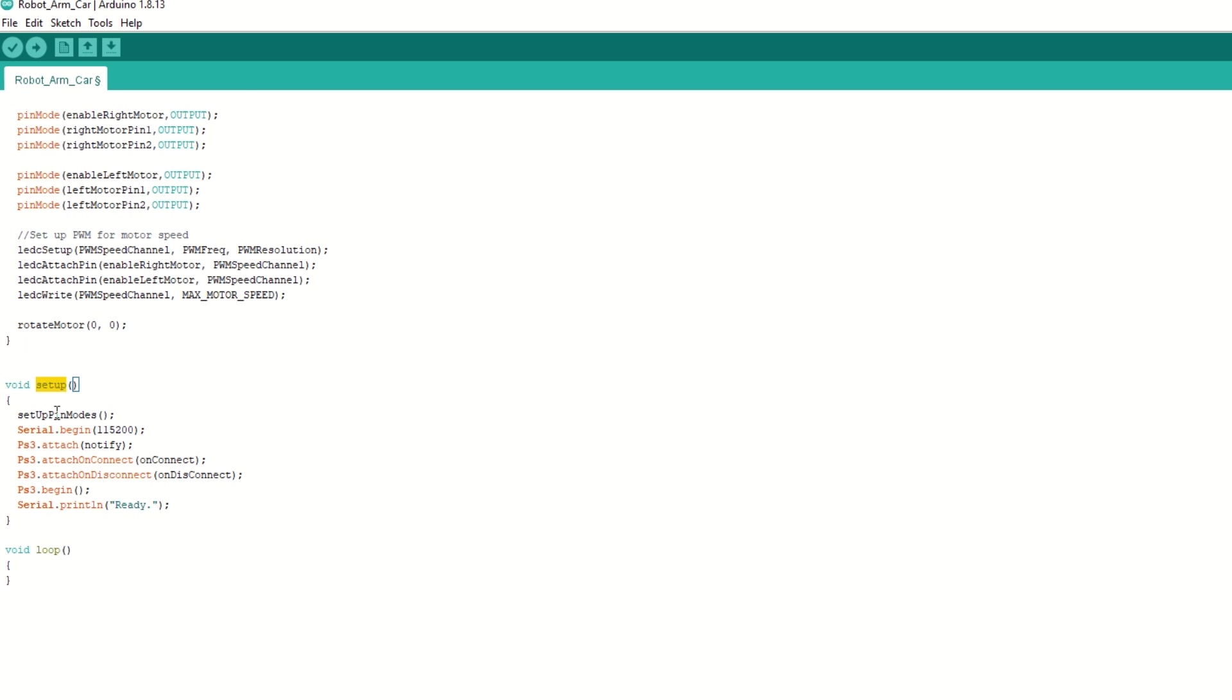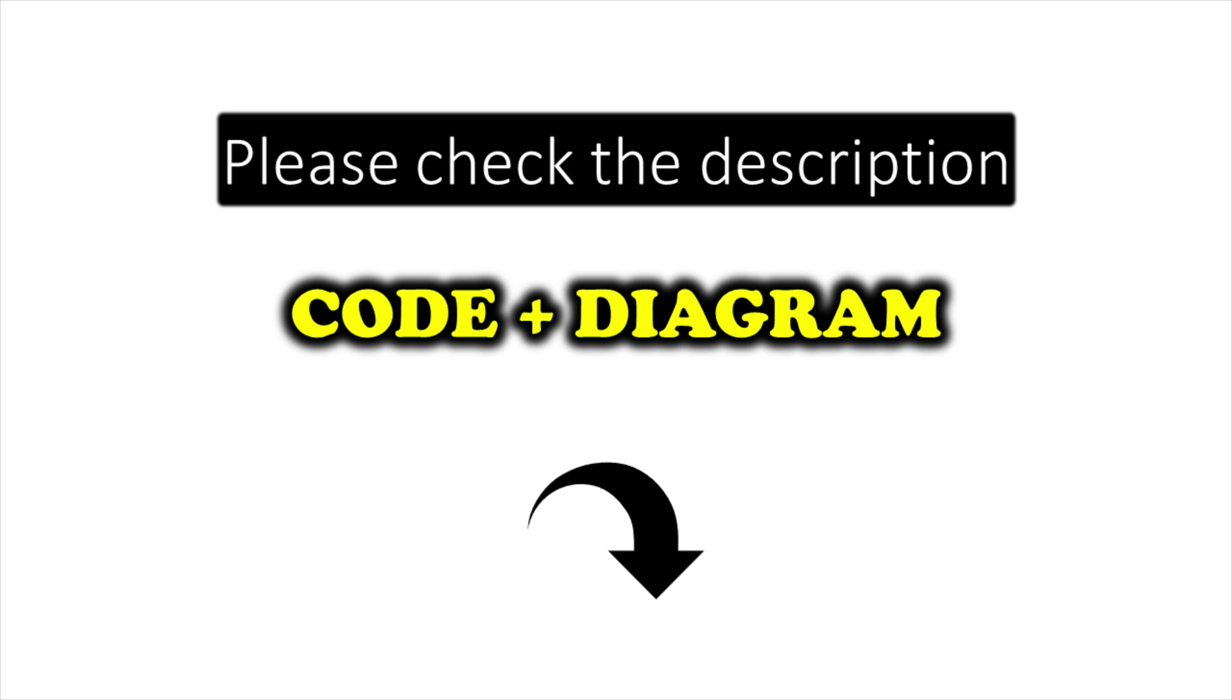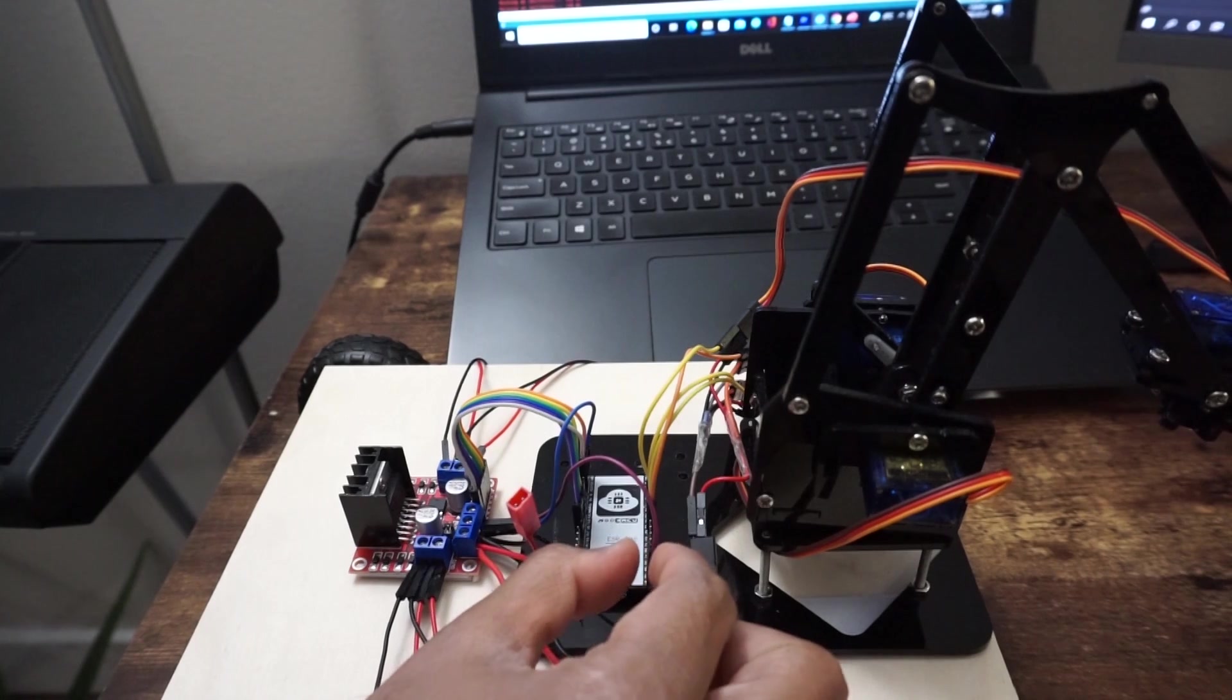Inside setup function, we will call setup pin mode function. We will attach notify and on connect callback function. Also we will attach on disconnect callback function. Then begin the PS3 communication. We can keep loop function empty. I have provided the link to the code in the description below. You can upload it directly. Now let's upload the code.